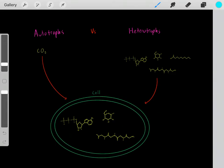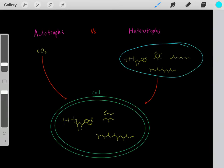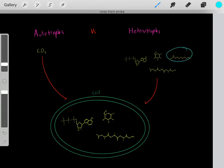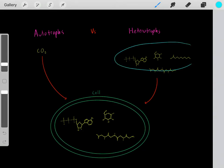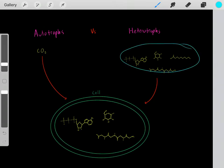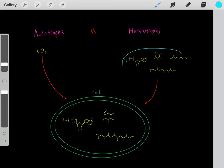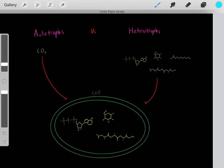So again, the point is, heterotrophs need to ingest organic molecules. They need to eat proteins and carbohydrates and fats. They need to eat other living organisms and other carbon-based molecules as a source of carbons to create their own carbon-based molecules.